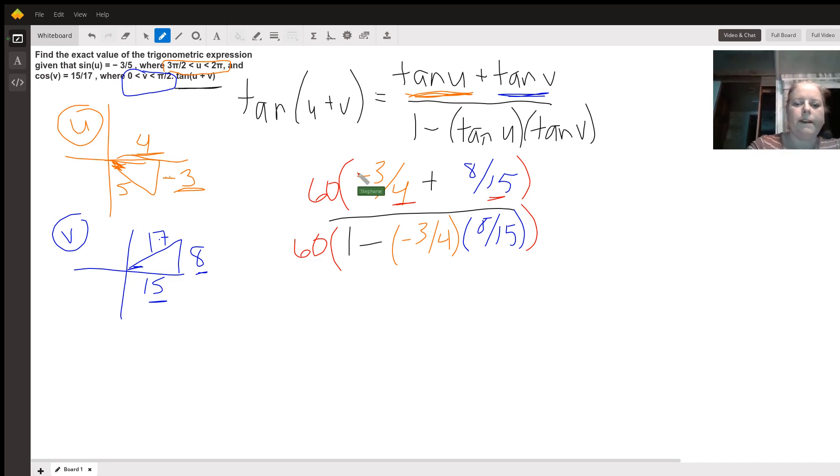So 60 times negative 3 fourths is negative 45. And 60 times 8 fifteenths is 32.